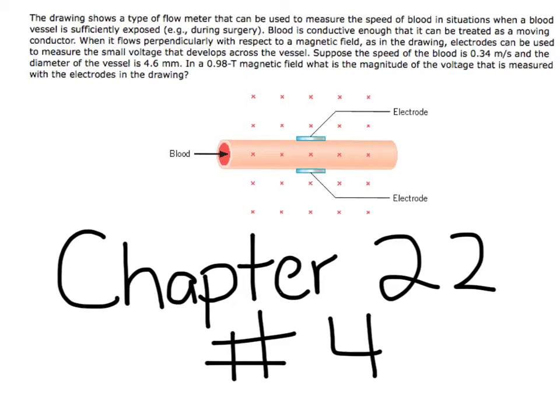The drawing shows a type of flow meter that can be used to measure the speed of blood in situations when a blood vessel is sufficiently exposed, for example during surgery. Blood is conductive enough that it can be treated as a moving conductor. When it flows perpendicularly with respect to a magnetic field as in the drawing, electrodes can be used to measure the small voltage that develops across the vessel.